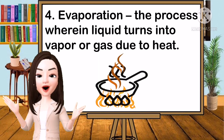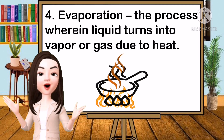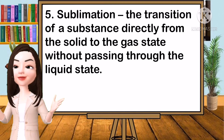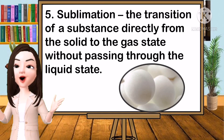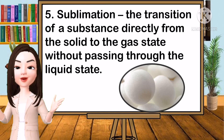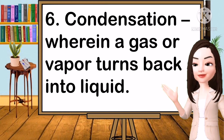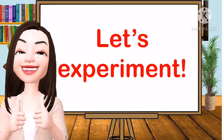Fourth is evaporation — it is the process wherein liquid turns into vapor or gas due to heat. Fifth is sublimation — it is the transition of a substance directly from solid to gas without passing through the liquid state. An example is moth balls placed in a cabinet that disappeared after one week and turned into gas. Number six is condensation — wherein a gas or vapor turns back into liquid.